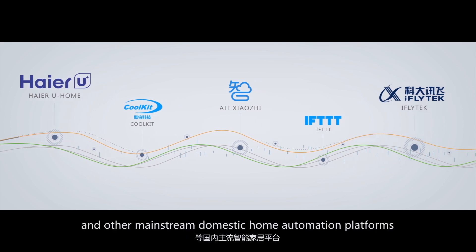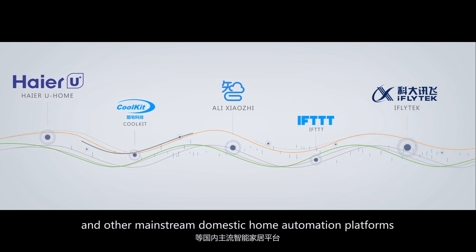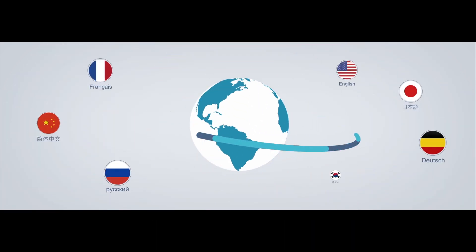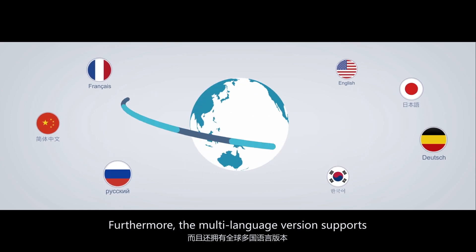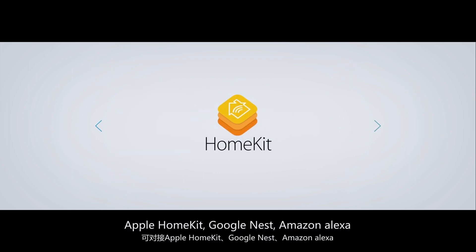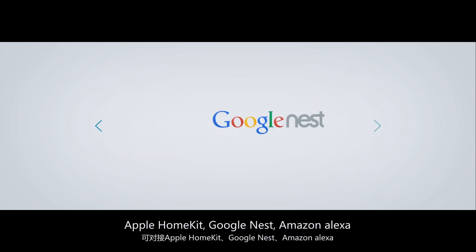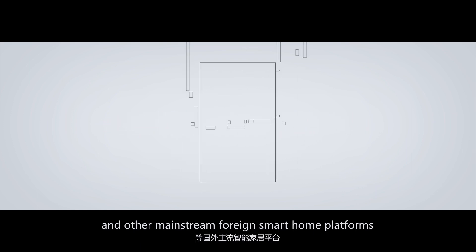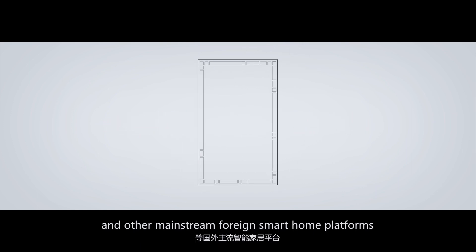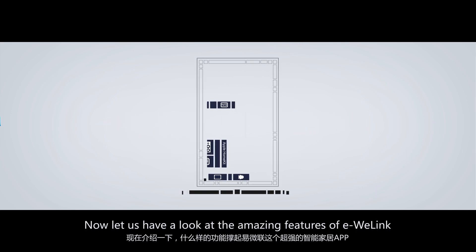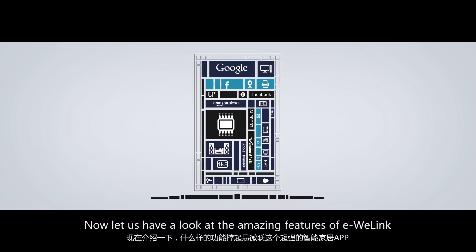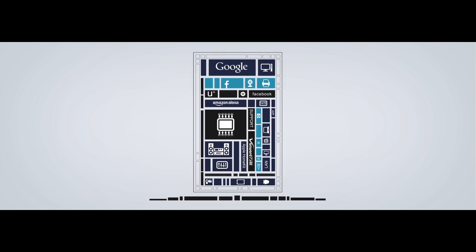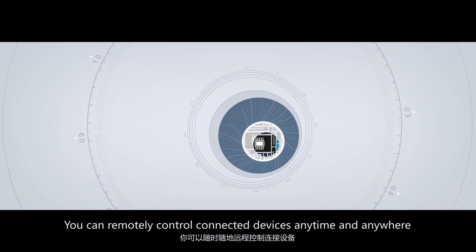and other mainstream domestic home automation platforms. Furthermore, the multi-language version supports Apple HomeKit, Google Nest, Amazon Echo, and other mainstream foreign smart home platforms. Now let us have a look at the amazing features of eWelink.